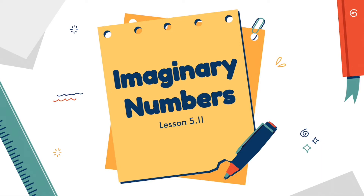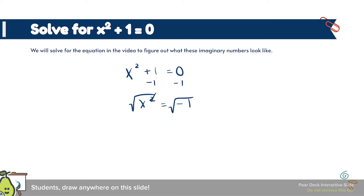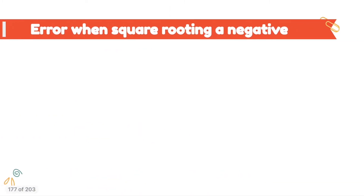The first lesson is imaginary numbers, which is 5.11, and it's connected to a previous video. Our goal was to solve for a solution, and we're going to find out that there aren't any real solutions. So if I want to solve this problem I'm going to subtract 1, and my overall answer is x² = -1. Then I have to square root both sides and I get x = √(-1). This will be undefined in our calculator, but we actually have a solution to that which we call imaginary numbers.